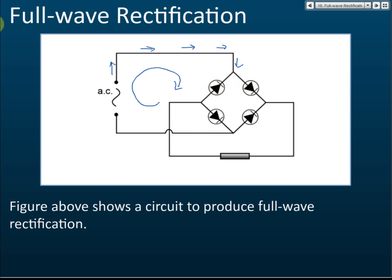The current cannot pass through a reverse-biased diode, so it goes to the right, passes through the diode, goes right again, goes down, then goes to the left and up.